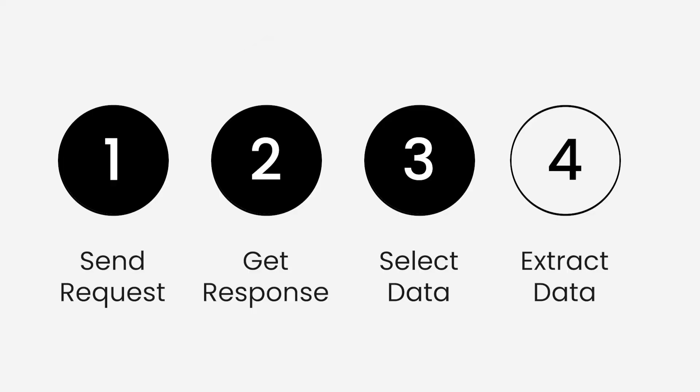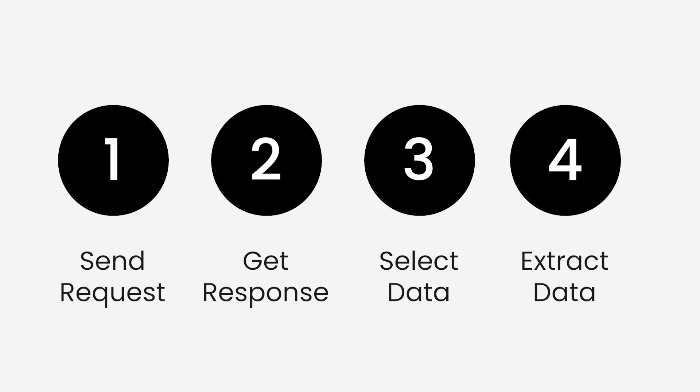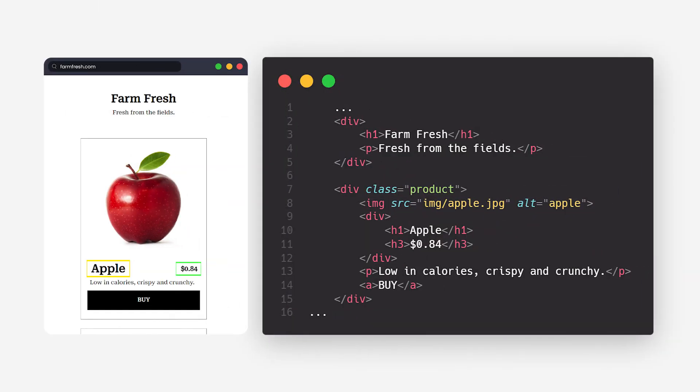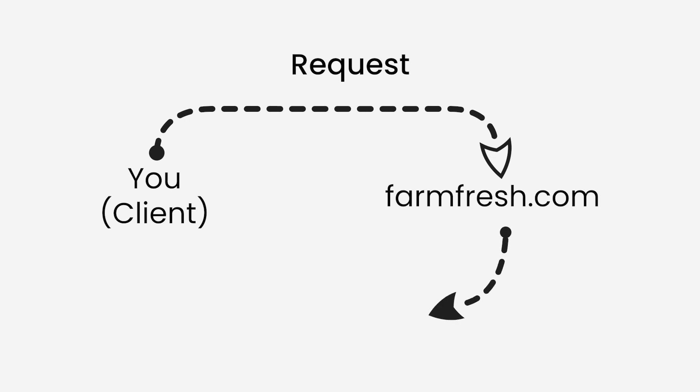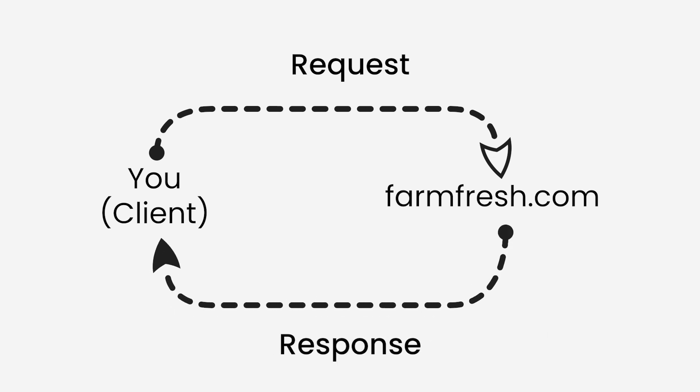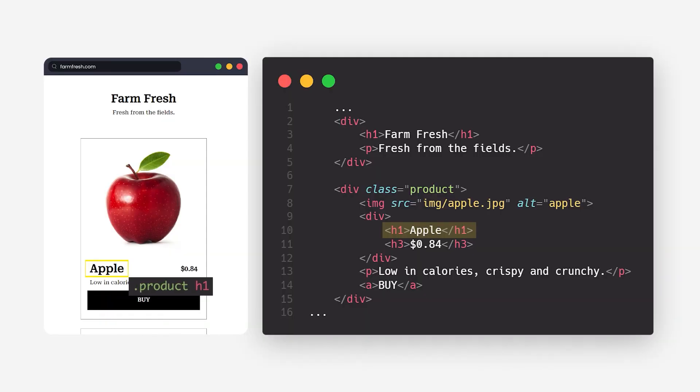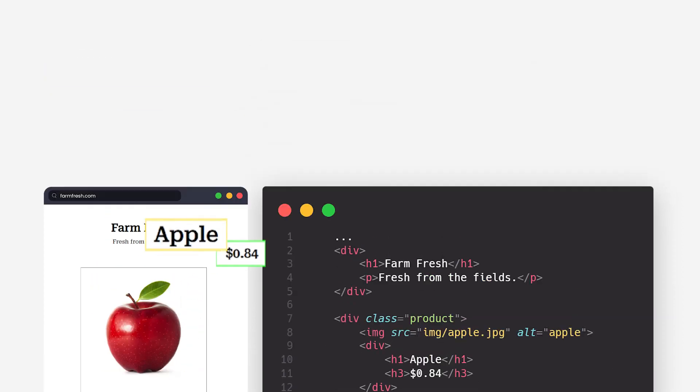After selecting the data we can simply go ahead and extract it. Finally, we get the data we wanted, which concludes our web scraping process. So what we did here is: requested the content, got the response as HTML, selected the data we want, and then extracted it. That's how web scraping works.